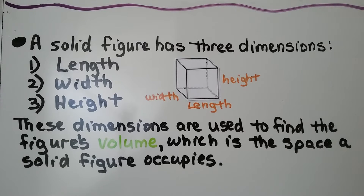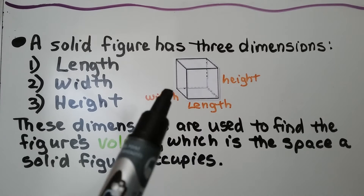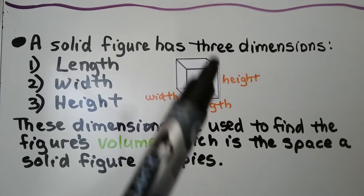A solid figure has three dimensions: length, width, and height. These dimensions are used to find the figure's volume, which is the space a solid figure occupies. So this cube has length, width, and height.